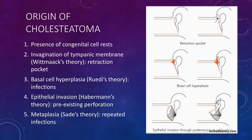The next theory is Rudi's theory. According to this theory, the basal cells of the germinal layer of skin proliferate under the influence of infection and lay down keratinizing squamous epithelium in the middle ear. The next theory is the epithelial invasion theory, i.e. Habermann's theory. According to this theory, the epithelium from the meatus or outer drum surface grows into the middle ear through a pre-existing perforation.